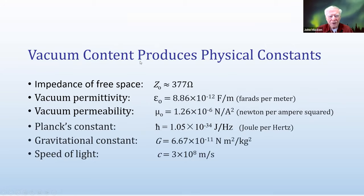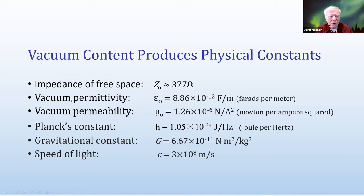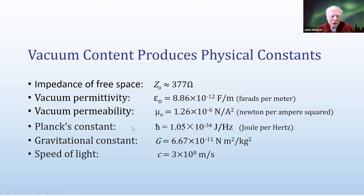We have all sorts of evidence there's something in the vacuum. For example, the vacuum has the impedance of free space, about 377 ohms. If the impedance were zero or infinite you could argue there's nothing there, but a specific impedance implies something creating it. We also have vacuum permittivity — a dielectric constant for the vacuum — plus magnetic properties, and Planck's constant enforced everywhere in the universe: the speed of light, the gravitational constant, and Planck's constant.